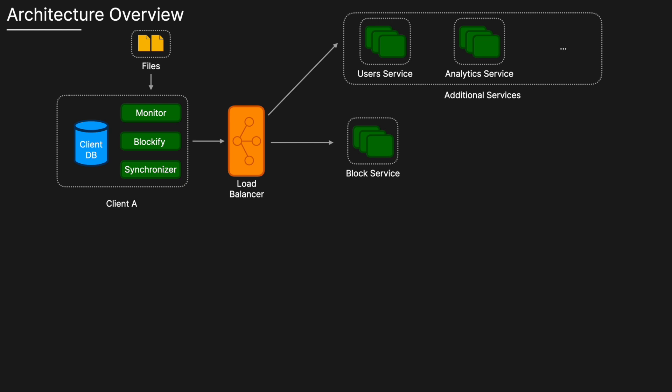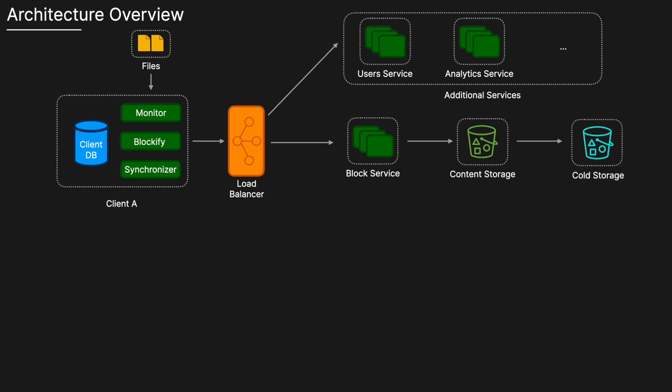The Block Service takes the files already broken into blocks and stores them in content storage. To reduce storage costs and improve security, we can implement compression and encryption. For compression, options include Huffman coding and arithmetic coding — though companies like Google and Dropbox would have their own proprietary algorithms. For encryption, we could use 256-bit AES. To further reduce costs, we can use cold storage like AWS S3 Glacier, with a policy to determine when to move objects there — perhaps using the Analytics Service to detect files not opened for a certain period.